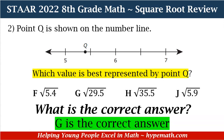8th graders, you can do it, especially if you have your calculator on hand. You just have to slow down and pay attention and look at what the question is asking you. If you were trying to hurry, a lot of students would have answered F, the square root of 5.4, and that would not have been correct. You just have to slow down and observe and see what the question is asking.